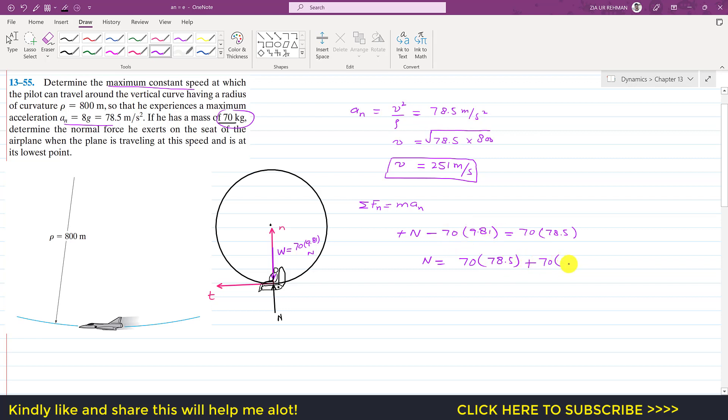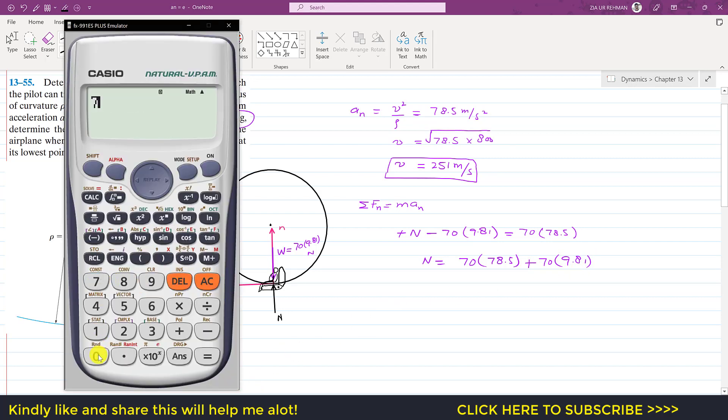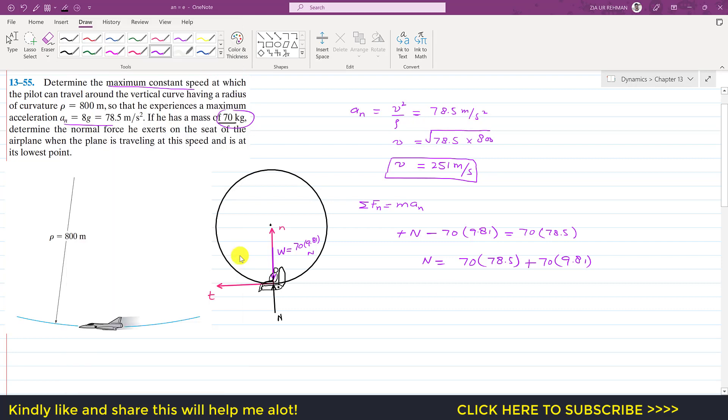plus 70 into 9.81. So 70 into 78.5 plus 70 into 9.81, so this is equal to 6181.7, so we